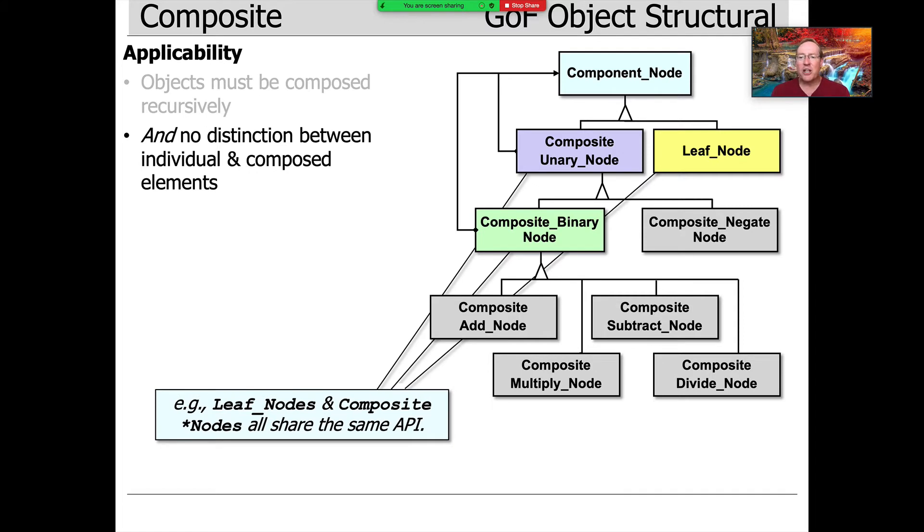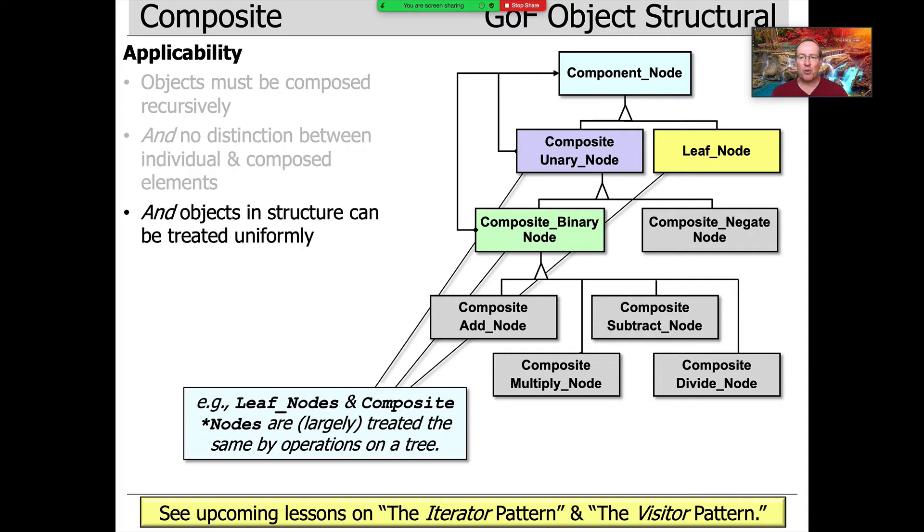Another applicability dimension is you don't want to distinguish between individual nodes and composed or composite nodes. For example, you can see that leaf nodes and composite nodes all share the same API, and they share that API because they all inherit from component node. So that makes it really easy for them to be used in a common way.